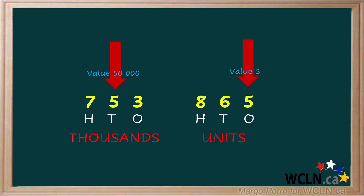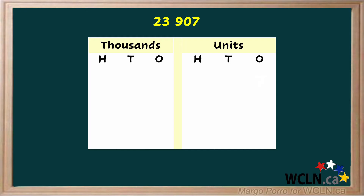Let's use a place value chart to explore another number. You'll learn to read and say these numbers in another lesson. The seven goes in the ones place; it has a value of seven. Next is the very important zero. Why is zero important? It tells us that there are zero tens. It holds a place so that we know the nine is in the hundreds place. If we put the nine in the tens place, it would seem like there were nine tens, or 90, instead of 900.